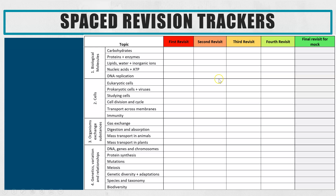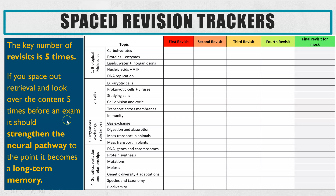That is why I've created this spaced revision tracker. The science shows that revisiting information five times is the ideal number to create a strong long-term memory. I've done an example here for AQA A Level — for the AS we've got biological molecules, cells, and topics three and four. You tick off to make sure you have revisited five times before your mock, your final AS exam, your A Level, or a class test. If you space out your retrieval and look at the content five times before the exam, all of biological molecules will be in your long-term memory.